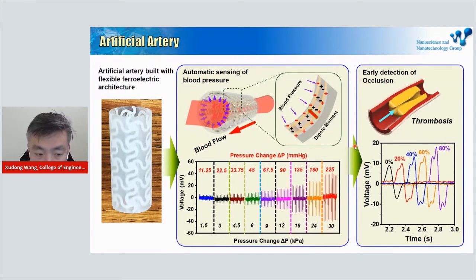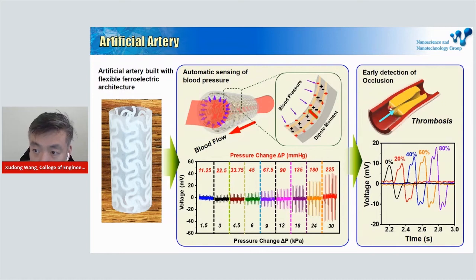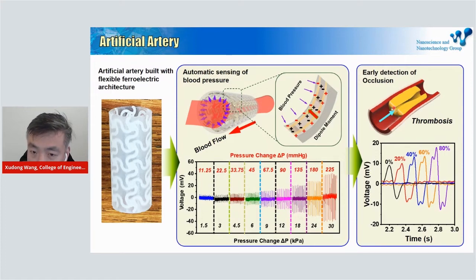More importantly, our three-dimensional structure can very sensitively detect motion changes of the blood vessels. This is very important because it allows us to detect small occlusions or blockages when something builds up inside. As you can see, when there is only 20% blockage in the blood vessel, the output signal starts to drift from a single perfect peak into two peaks, indicating something is happening at a very early stage. This capability will probably save many lives for patients who have had this implantation.